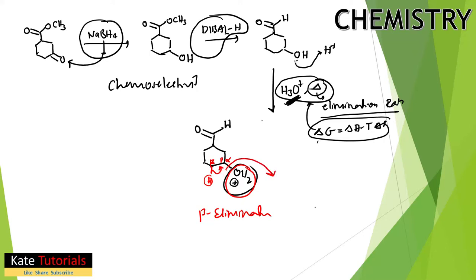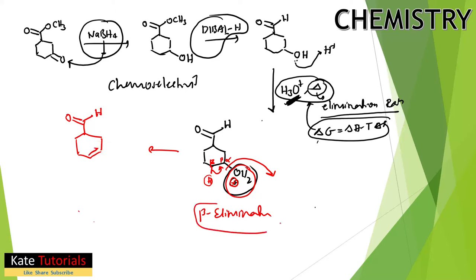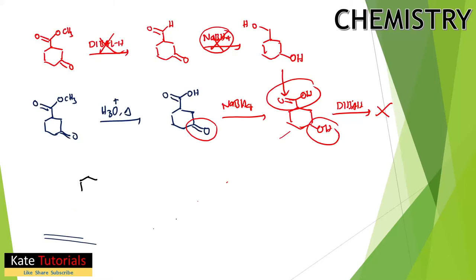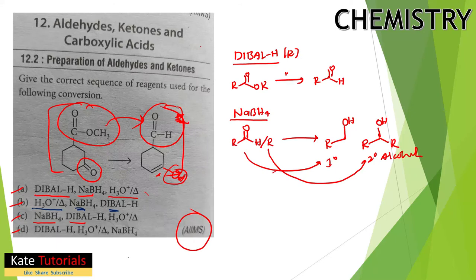In beta elimination, the beta hydrogen leaves along with the OH2+ leaving group, generating a double bond (alkene). The aldehyde remains intact. This gives us the required product: an aldehyde and an alkene. So option C is the correct answer.